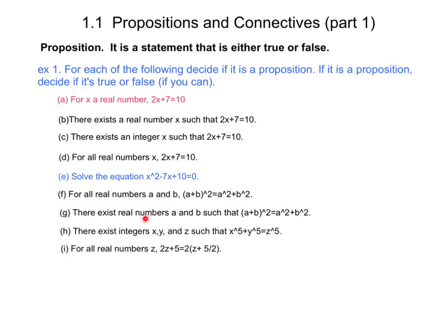Look now at G. G is a true proposition because there do exist real numbers a and b with that property. For example, a equal to 0 and b equal to 0 would be an example.